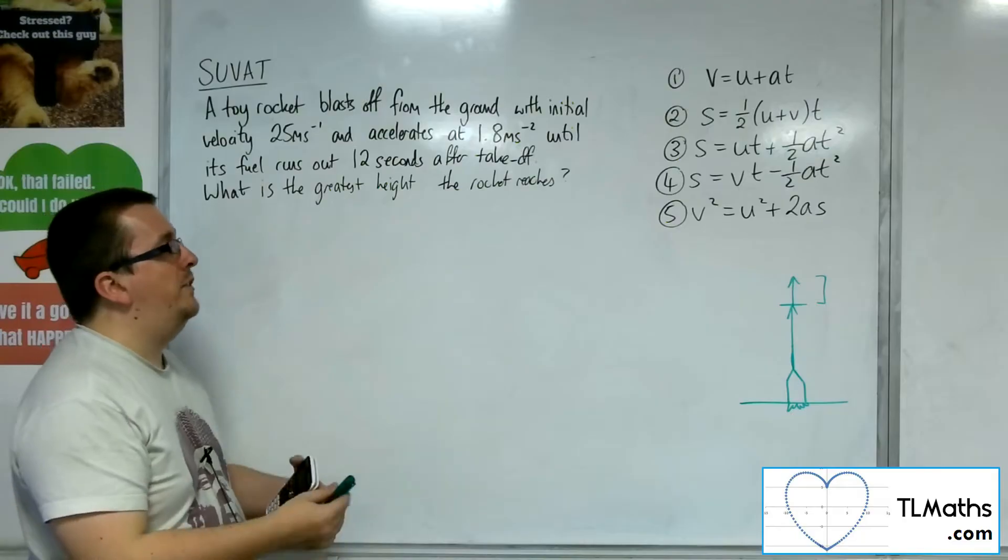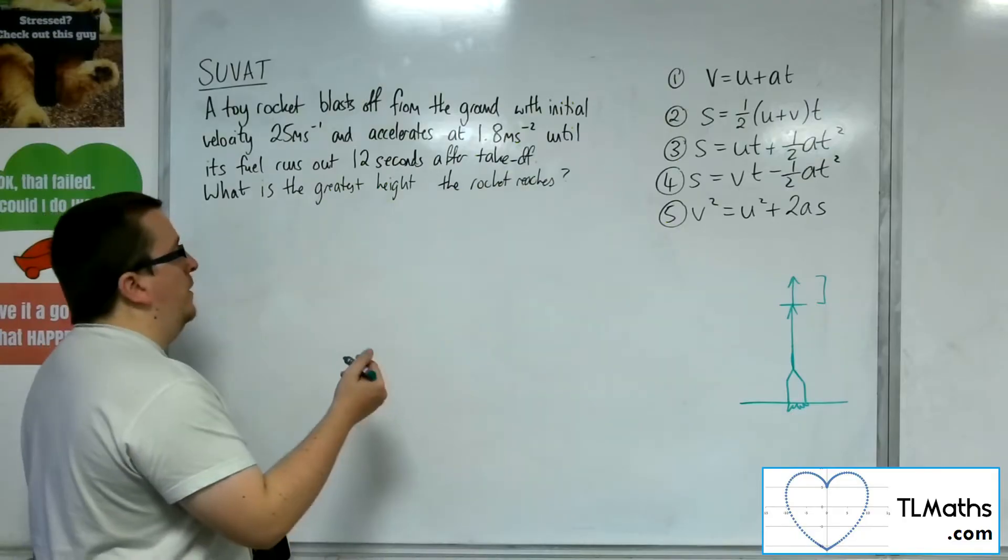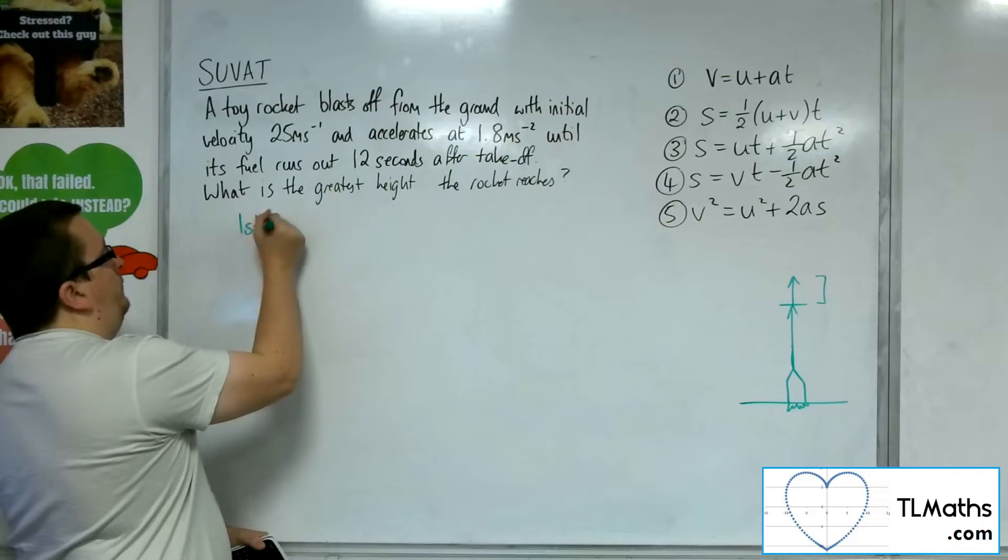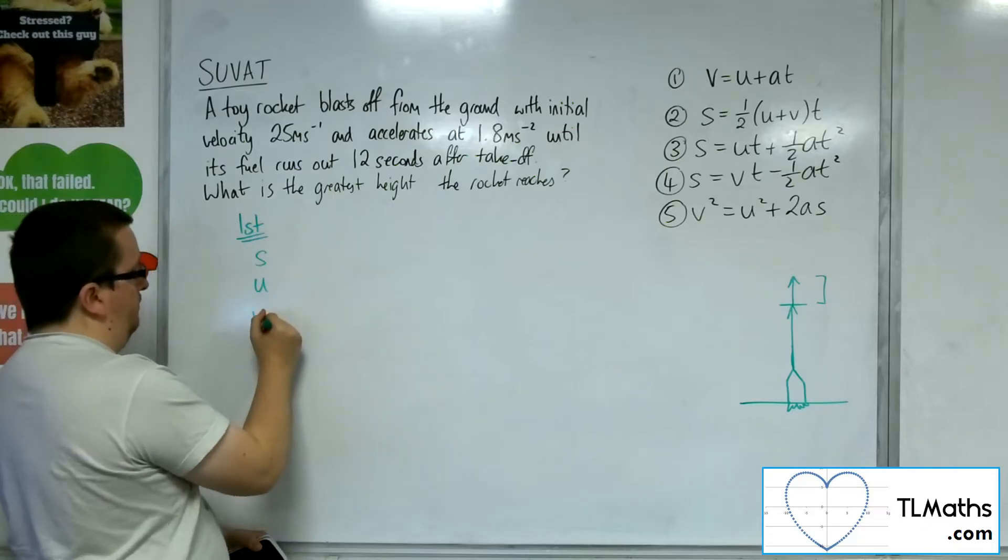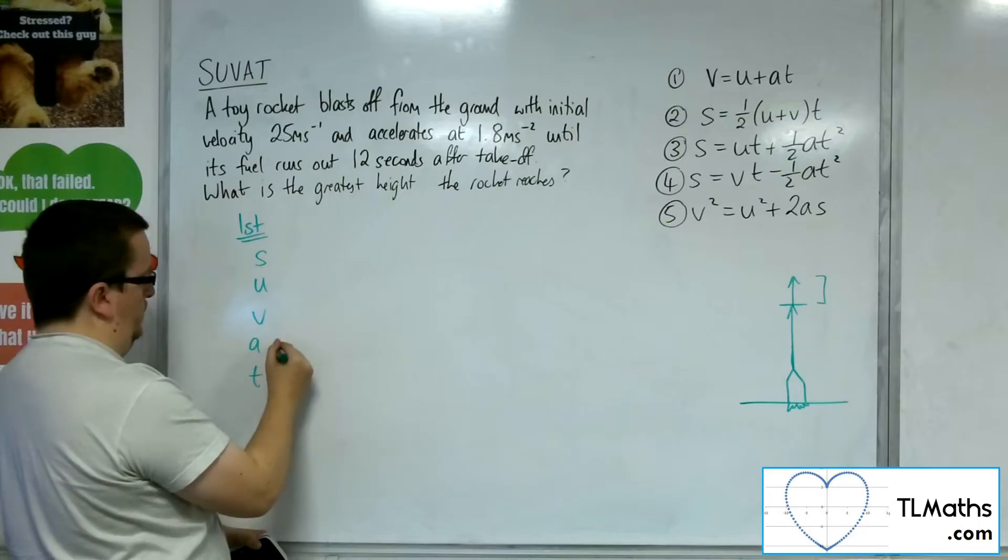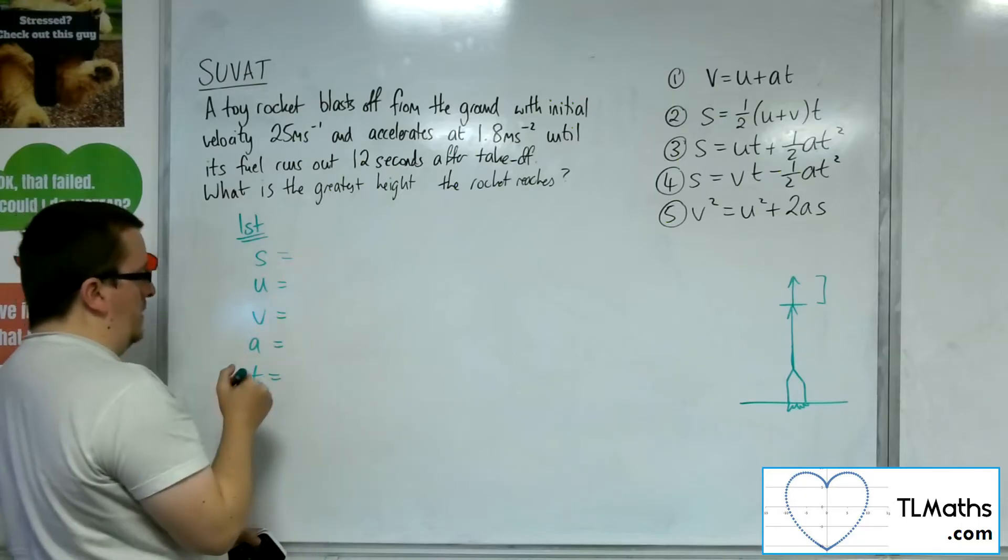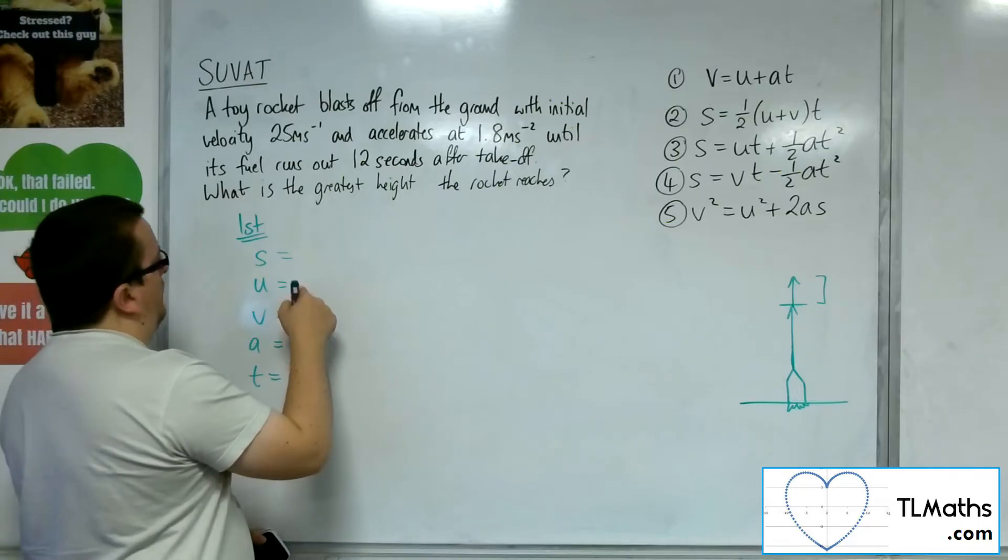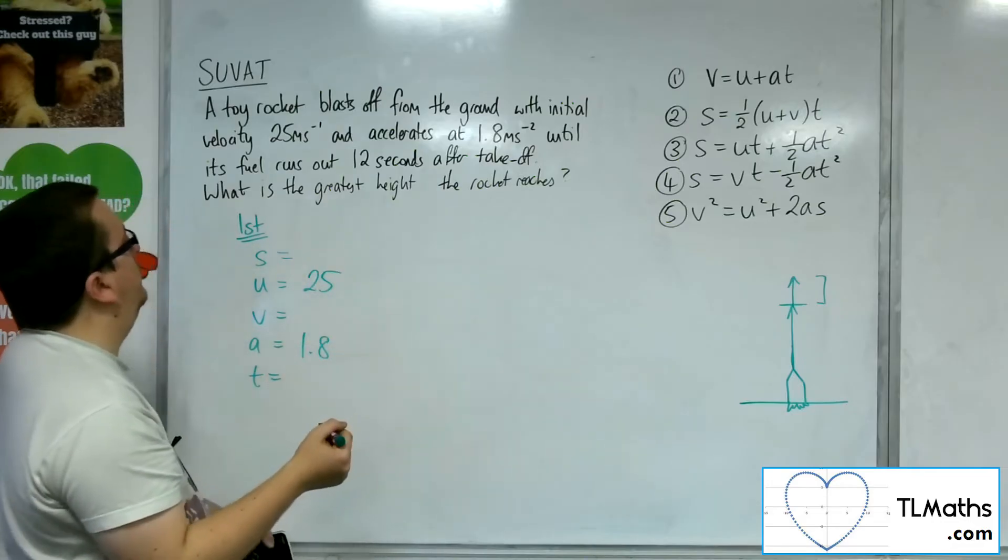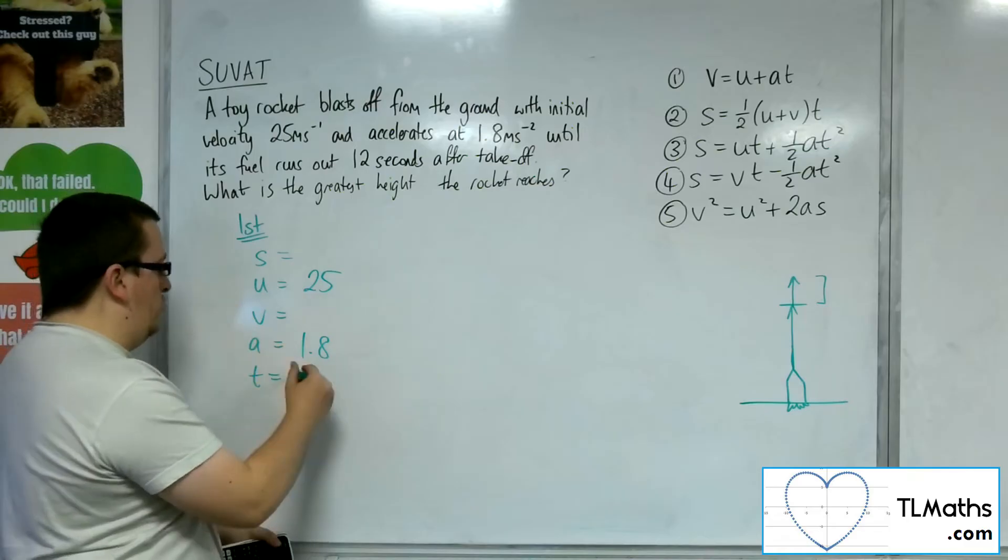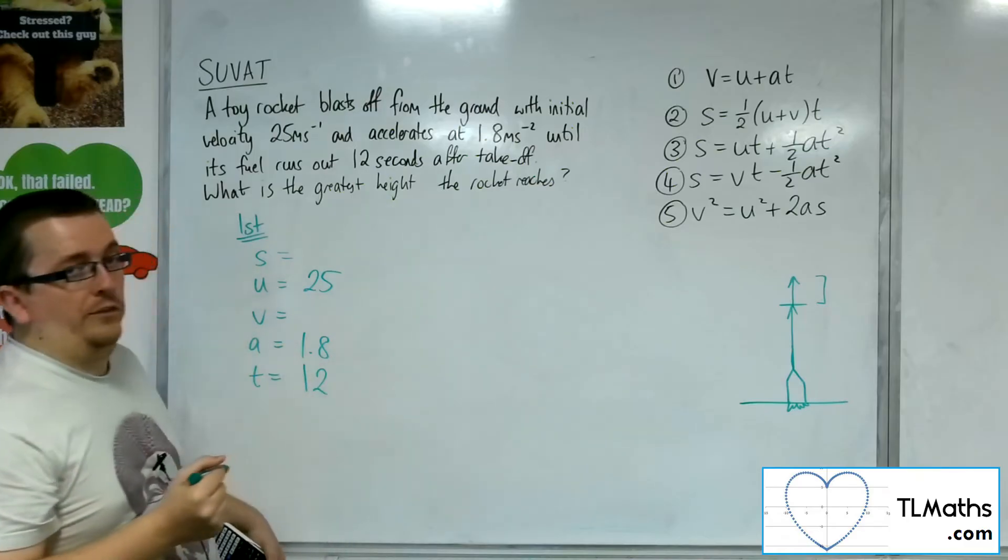So for the first section of the motion, we've got the SUVAT. Now the initial velocity is 25. We're accelerating at 1.8 metres per second per second, and it's travelling for 12 seconds like this.